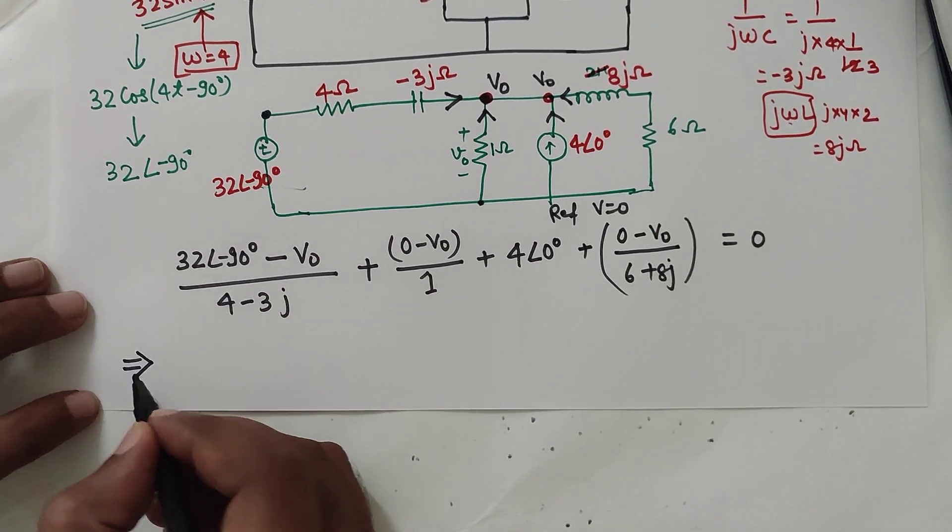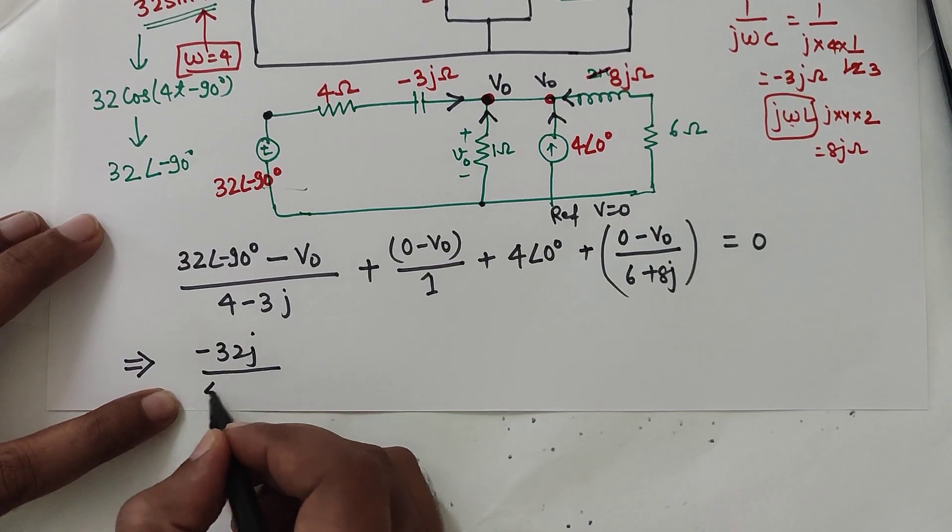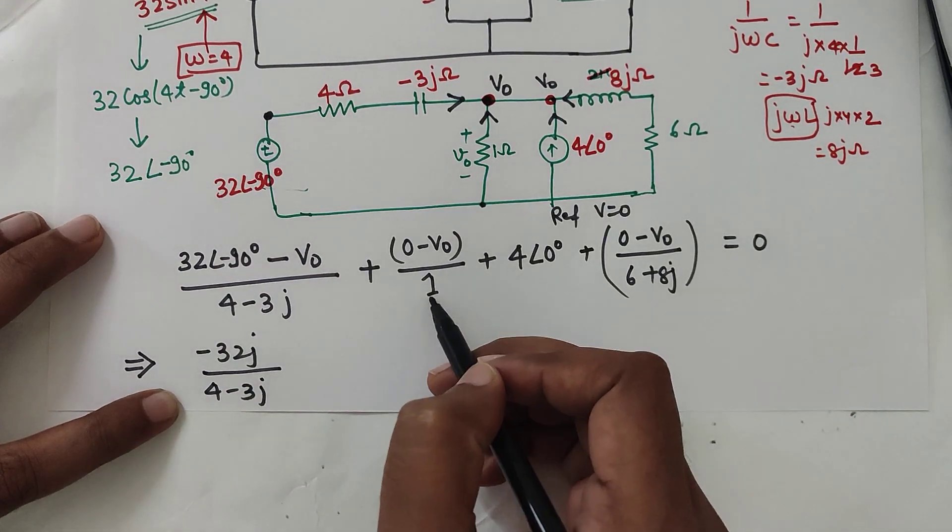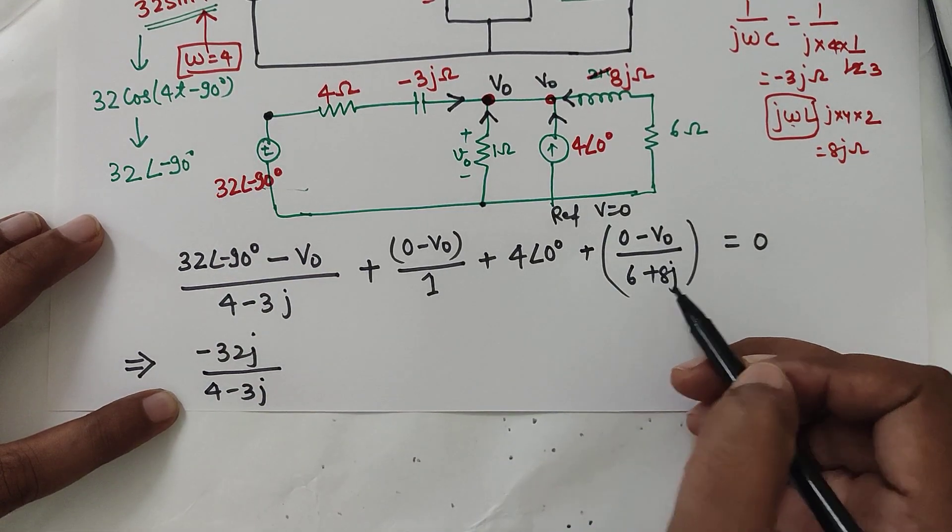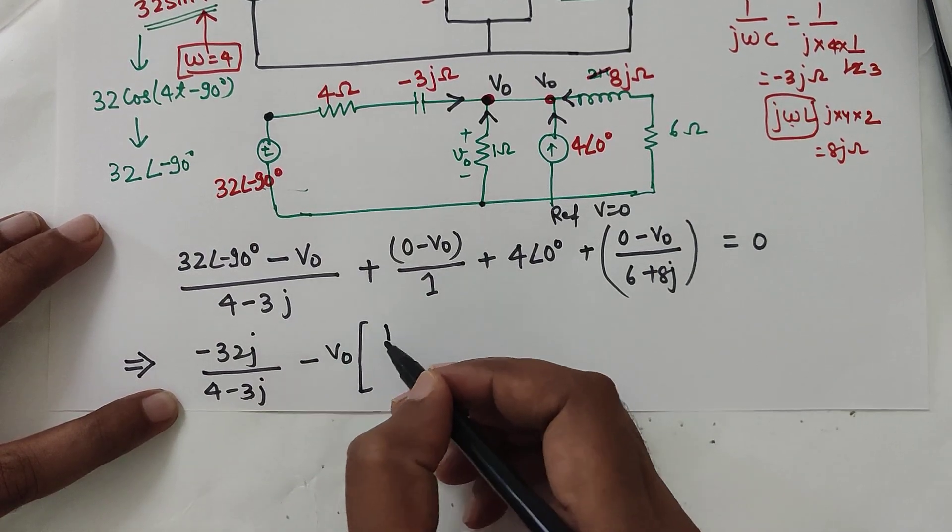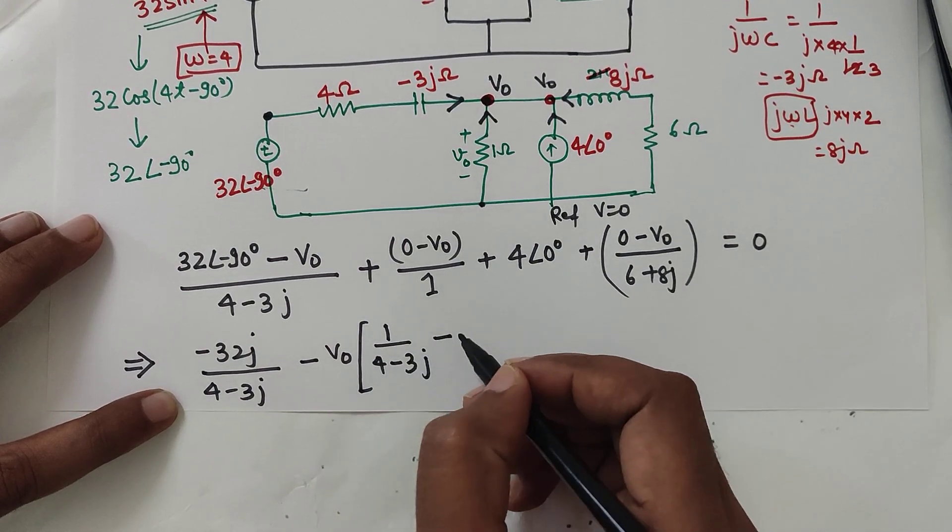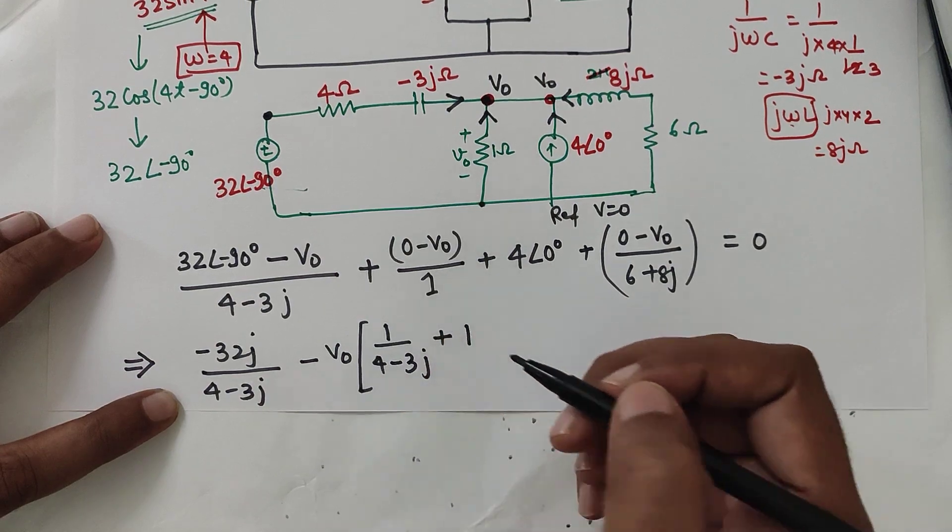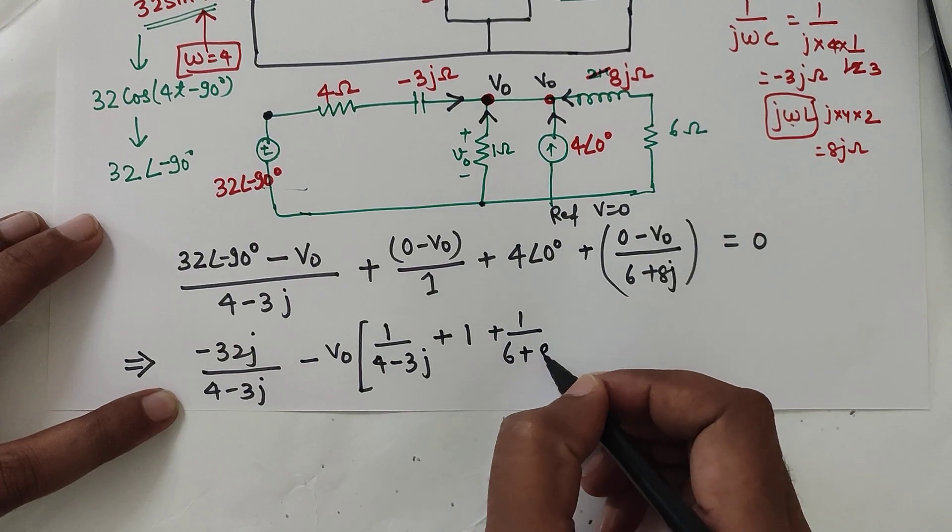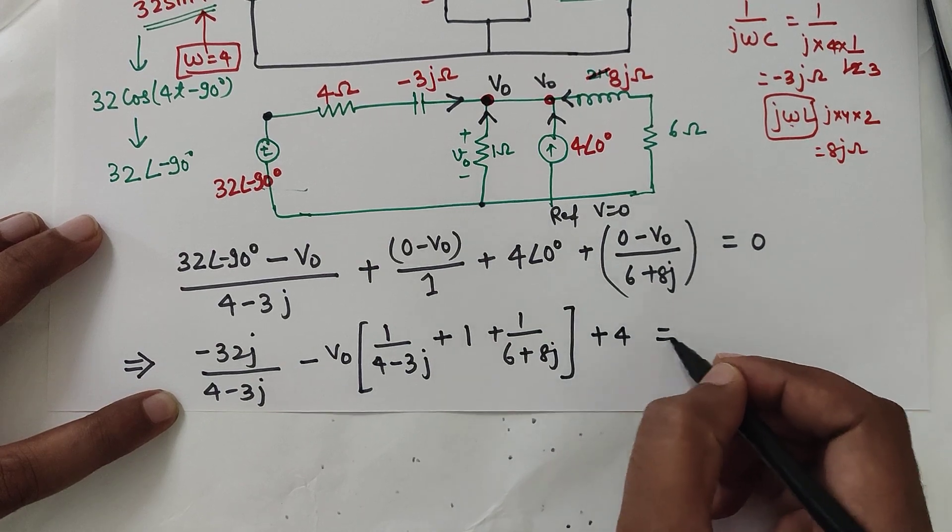Which can be simplified as 32 angle minus 90 is minus 32j divided by 4 minus 3j. Then minus V0 by this, minus V0 by 1, and minus V0 by this. I can directly take minus V0 common because it is there in all the terms. Then it is 1 by 4 minus 3j plus 1. Here if I take 1 by 6 plus 8j, then plus 4 equal to 0.